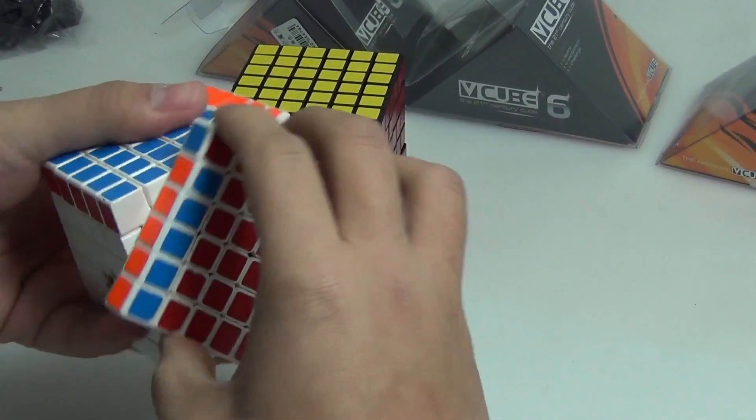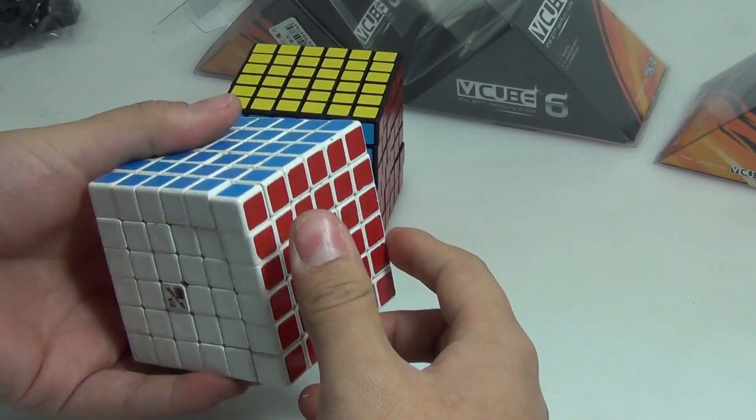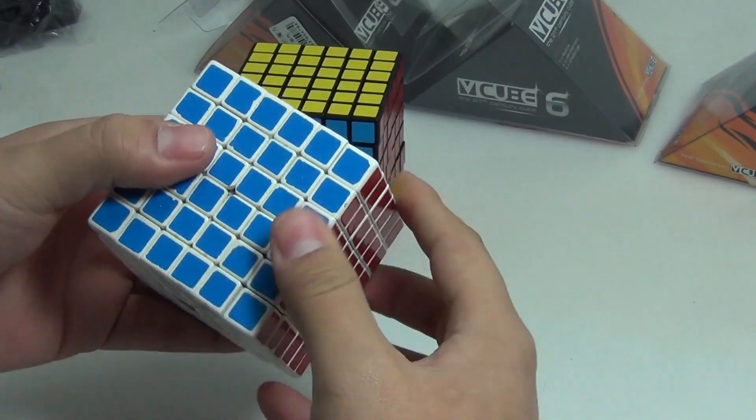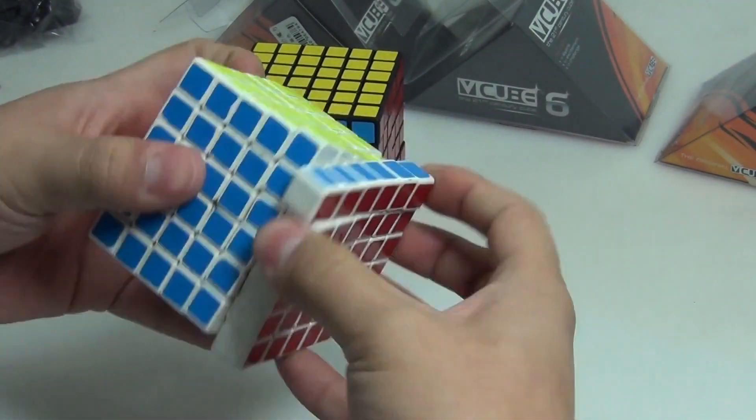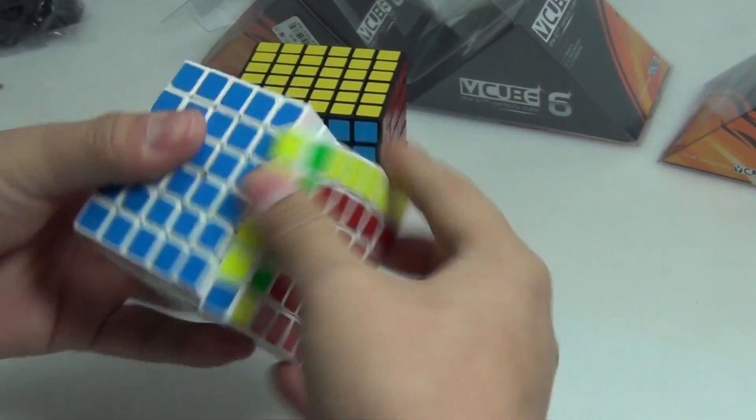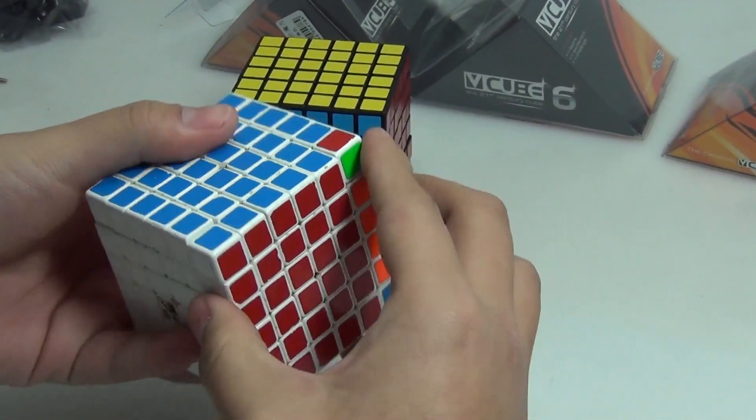Almost all the 6x6x6 speed solvers in China use the V-Cube which I modified.